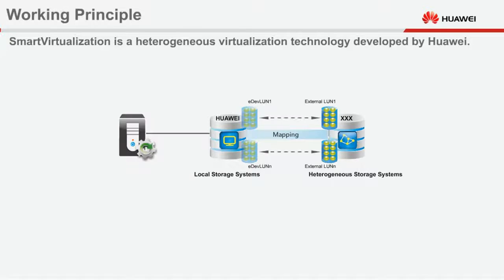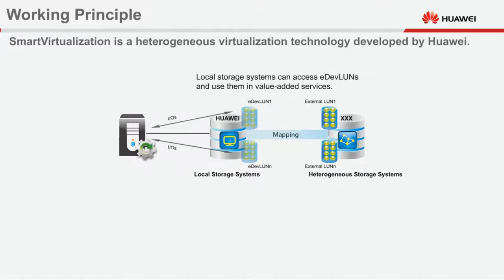A local storage system can use an external LUN as a local resource by accessing and operating the external LUN's corresponding E-Dev LUN. All value-added features of a local storage system can use E-Dev LUNs. An application server accesses an external LUN through its E-Dev LUN.